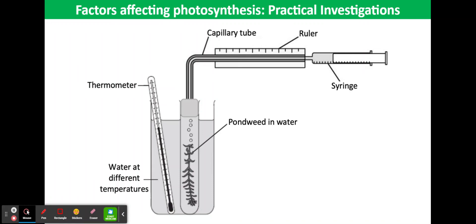This video tutorial is about the practical investigation that can be done to look at the factors affecting photosynthesis. There are many ways to measure the rate of photosynthesis, including the rate of uptake of raw materials such as carbon dioxide, or the rate of production of the by-product oxygen.